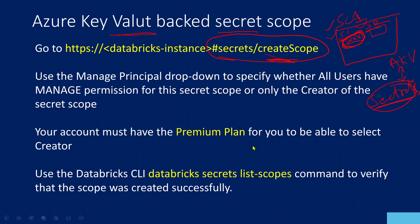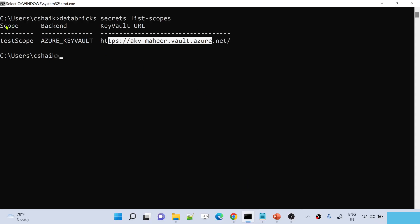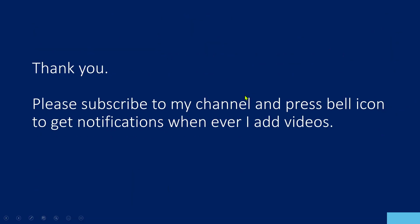As I said, your account should be a premium plan account if you want to select the creator option inside the manage principal when creating a scope. The 'databricks secrets list-scopes' command helps you list all available scopes inside your Databricks workspace. So far we created only one secret scope which is backed by Azure Key Vault. That's it for this video — I hope you enjoyed it. Thank you for watching, please subscribe to my channel and press the bell icon to get notifications.